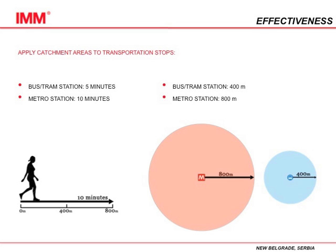The catchment area can be looked at as the comfortable walking distance. For bus and tram stations it is about 5 minutes, and metro stations are 10 minutes. So we can say that the bus and tram station catchment area is considered 400 meters, and the metro station 800 meters.